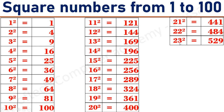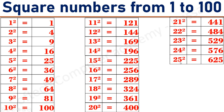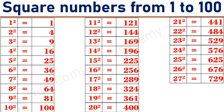23 square equals 529. 24 square equals 576. 25 square equals 625. 26 square equals 676. 27 square equals 729.